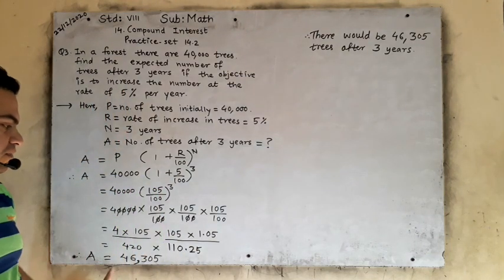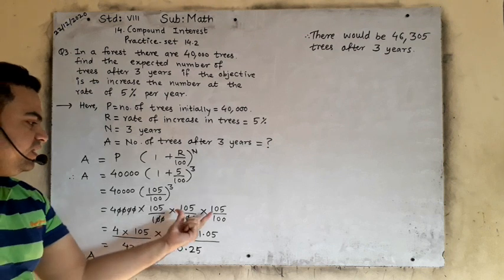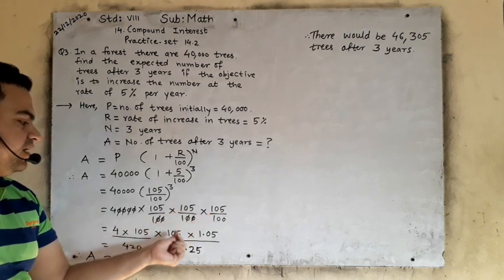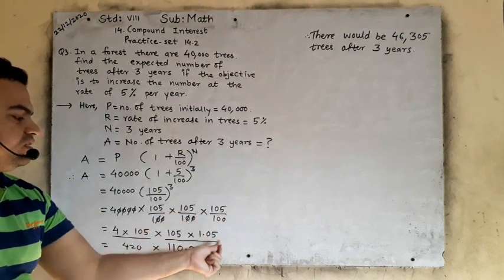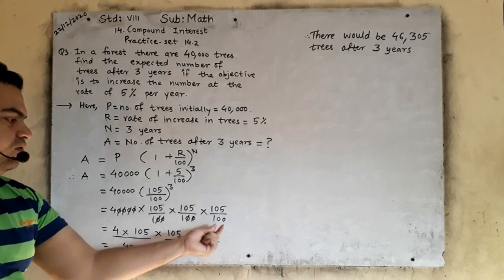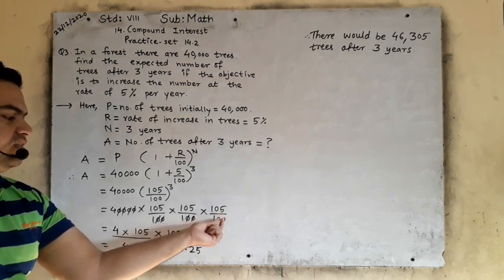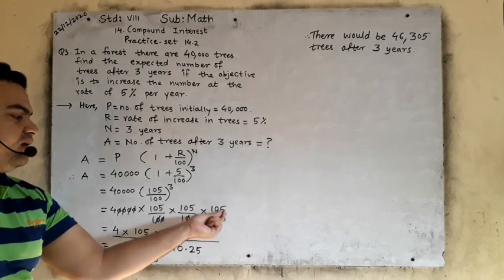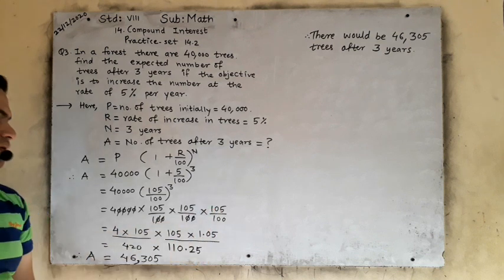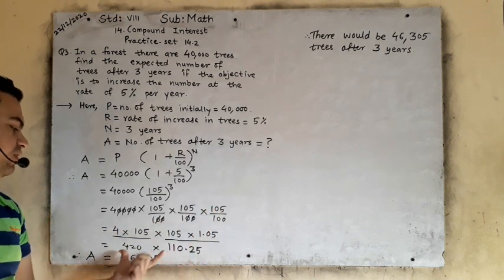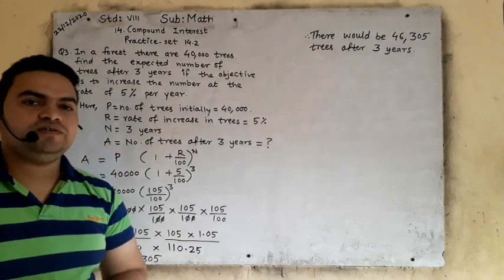These two you will multiply and the answer will come this. This approximate symbol is used. 105 multiplied by this can be written as 1.05 because there is a 100 — 100 has 2 digits, so you will give a decimal point after 2 digits. Multiply these two and the answer will come. These two you will multiply and the answer will come. I hope you understood.